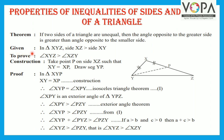Given: in triangle XYZ, side XZ is greater than side XY. We have to prove angle XYZ is greater than angle XZY. For this, construction: take point P on side XZ such that XY is equal to XP, shown with a similar sign, and draw segment YP.